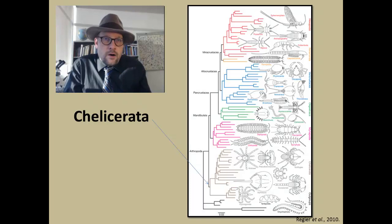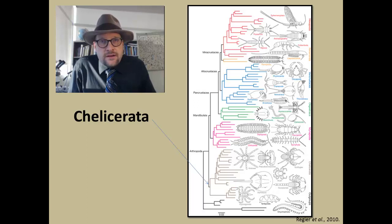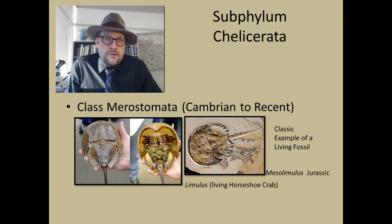Not all groups have chelicerae, and some crustaceans utilize claws in a similar manner, so be careful. Another defining feature of the Chelicerata is the fact that none of its members exhibit antennae, which is kind of peculiar.